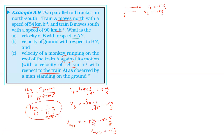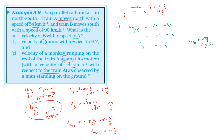First, velocity of B with respect to A equals velocity of B minus velocity of A. Velocity of B is minus 25, minus velocity of A which is 15. So minus 25 minus 15 equals minus 40. Velocity of B with respect to A is 40 meter per second towards south.